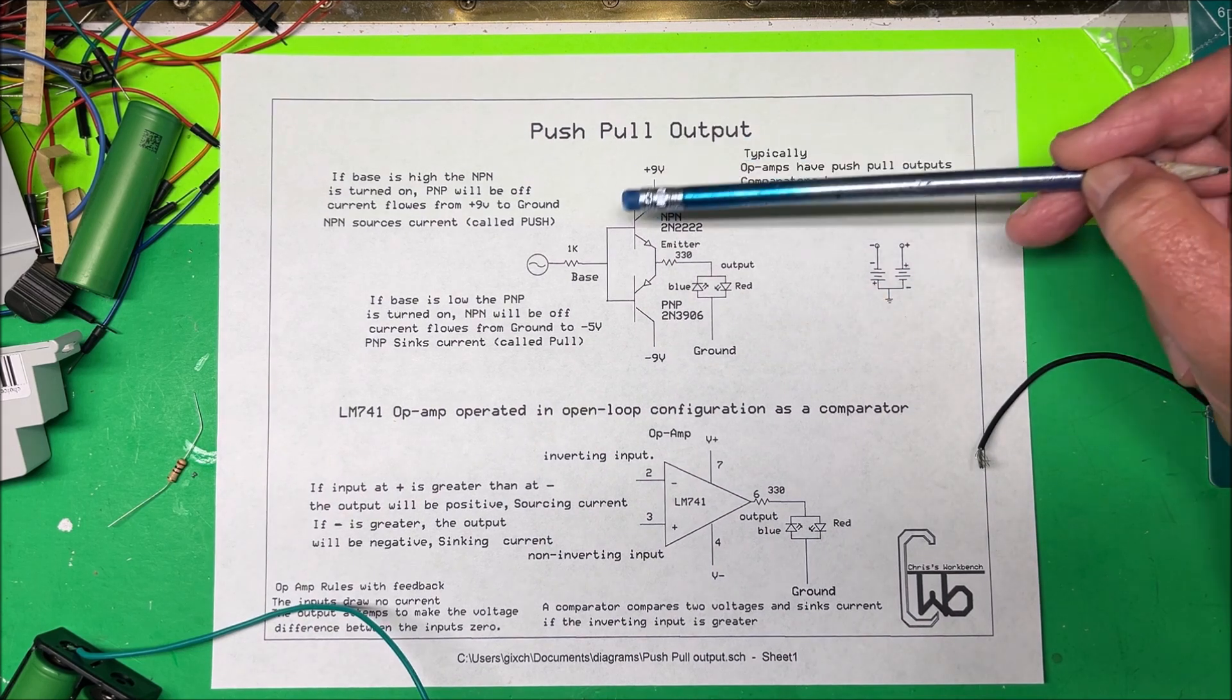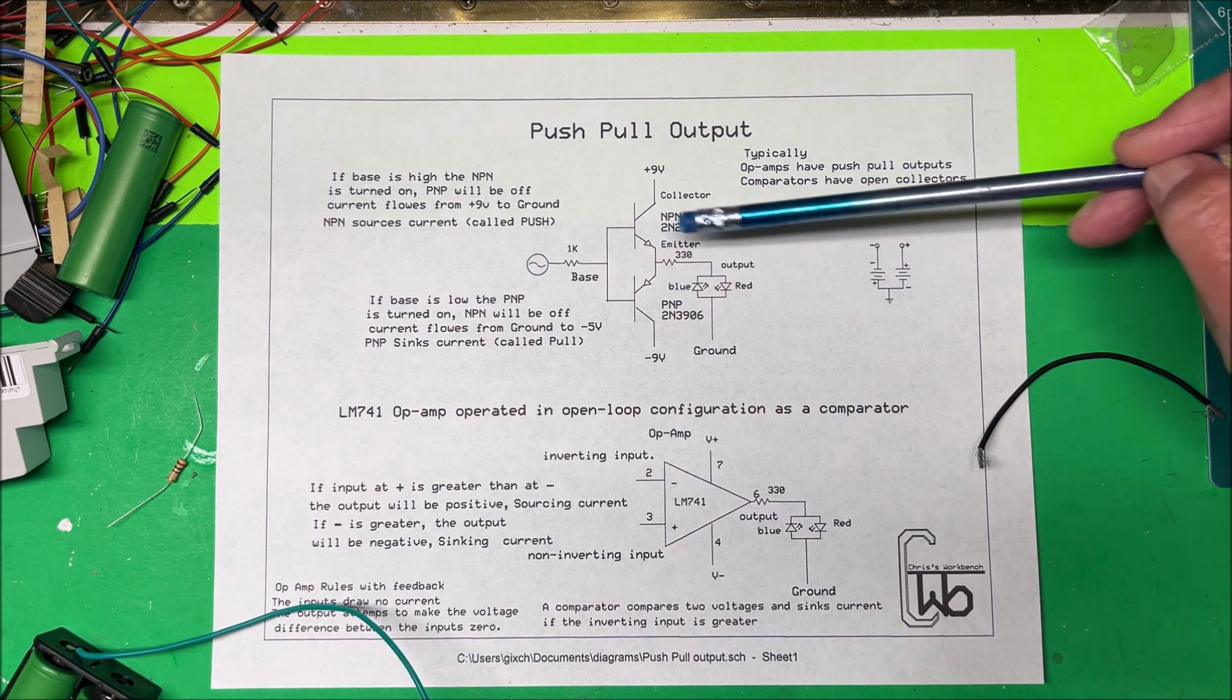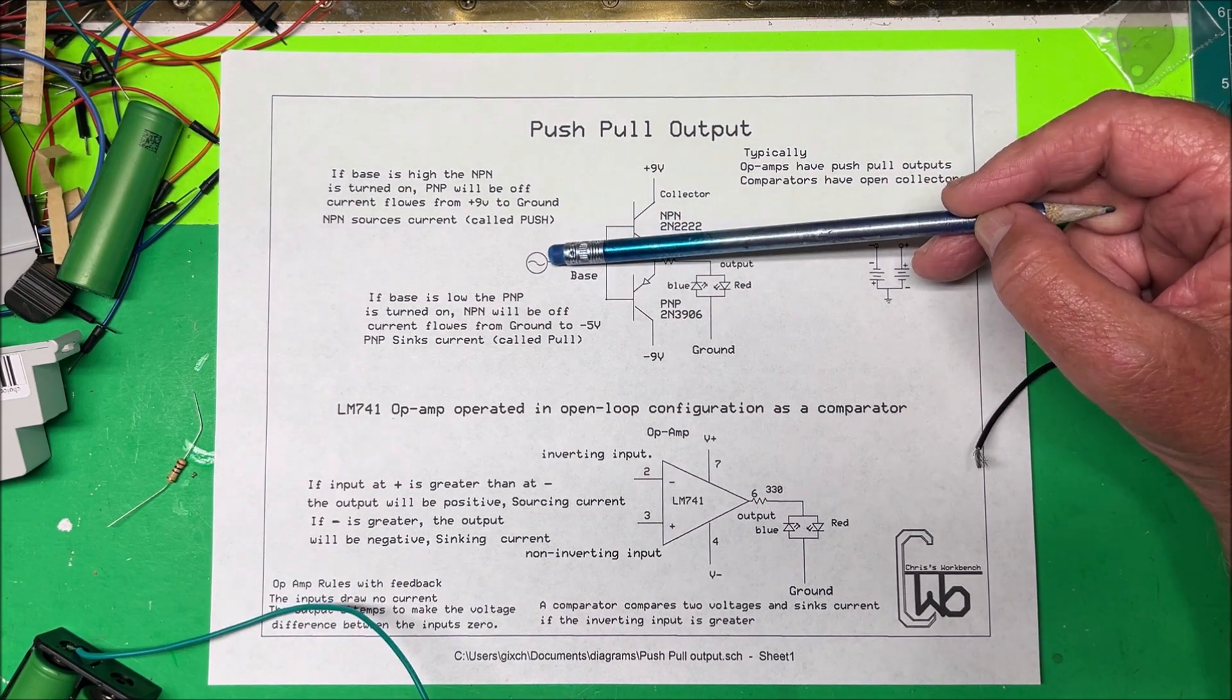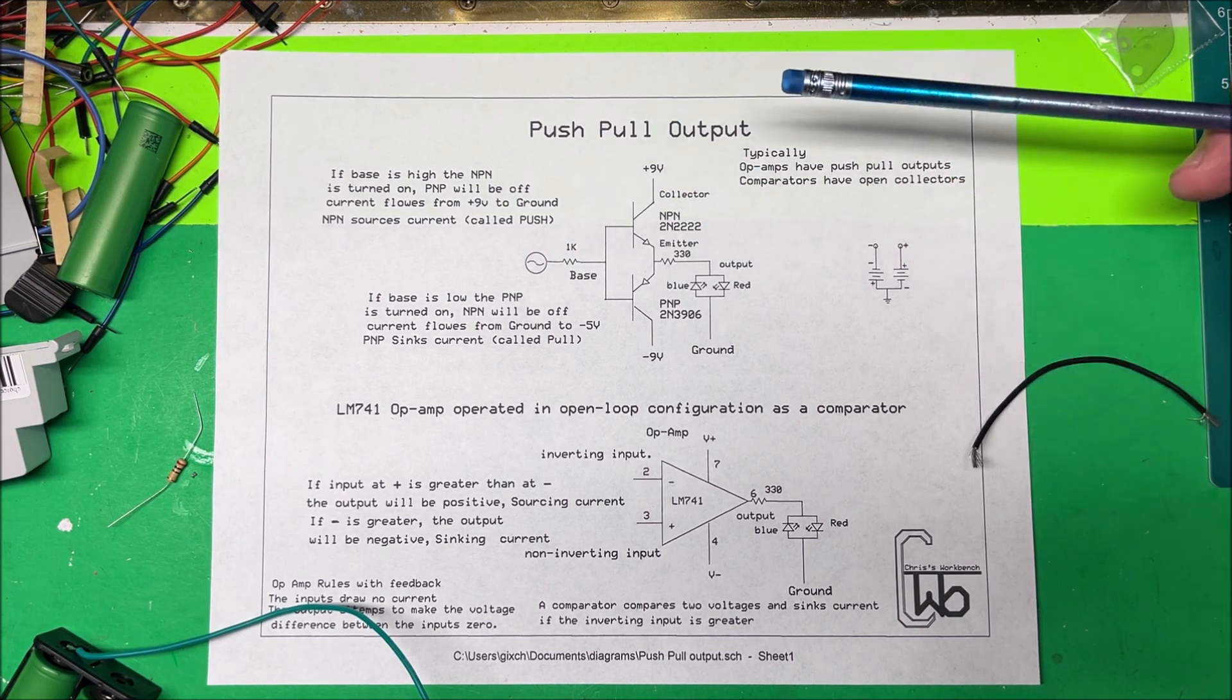So that's how our push-pull output is going to work with these two transistors. If you have a positive voltage here we're going to be sourcing current, if you have a negative voltage out here we're going to be sinking current.